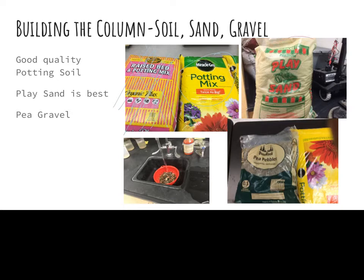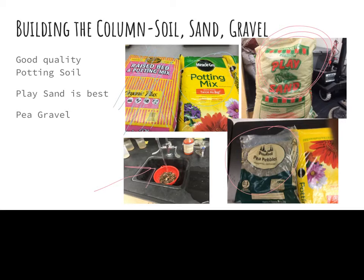I tend to like play sand the best. Construction sand will work if you ask for the cleanest available. Play sand is usually cleaner, though sometimes we get batches that aren't very clean. You can get gravel from the garden store or hardware store — pea pebble gravel works great. It's cheap, about $3 a bag, but you have to rinse it. I have one colander per group, bought at the dollar store, and the kids rinse their gravel until it's super clean.